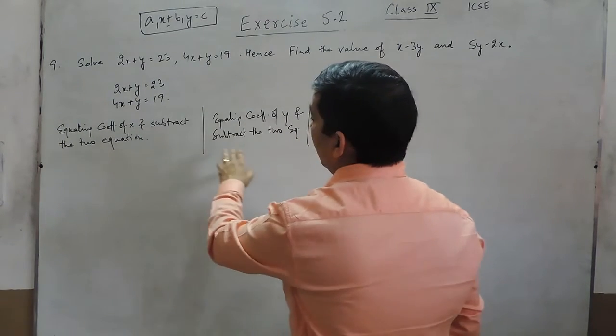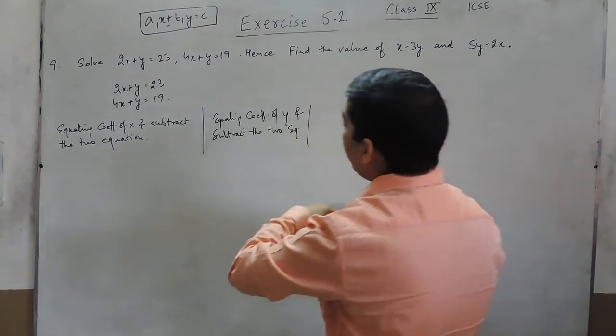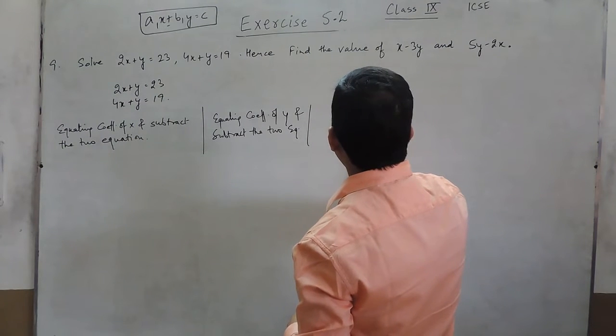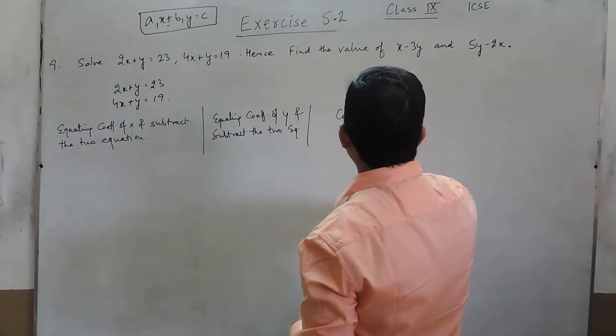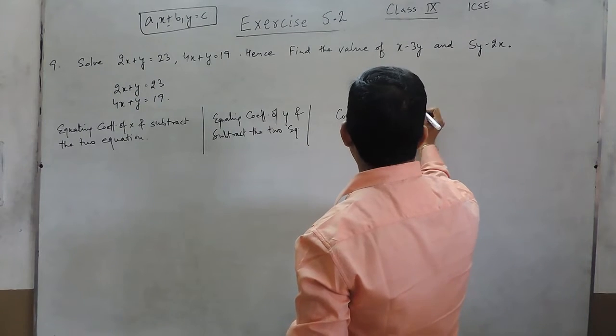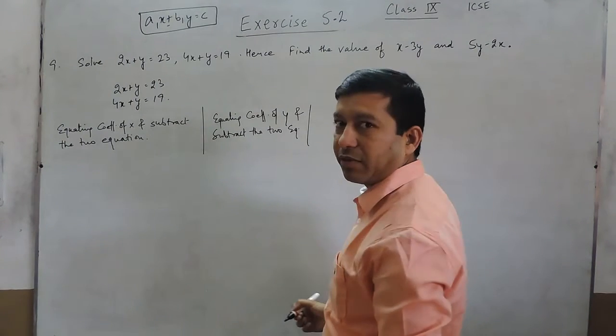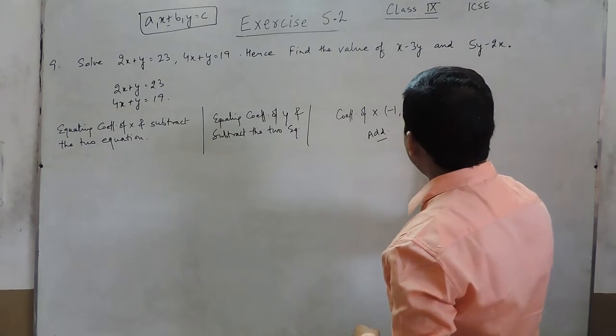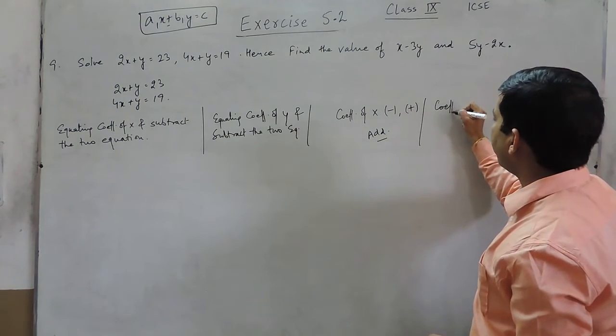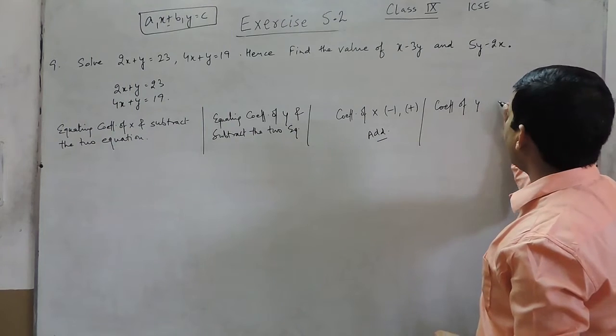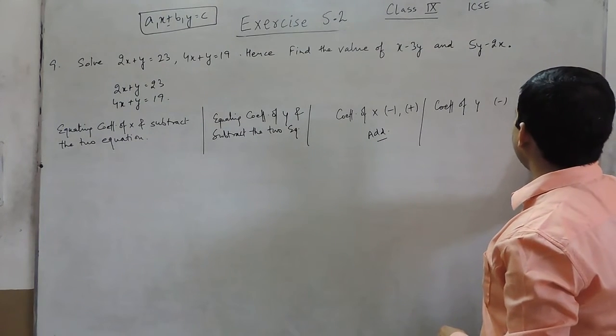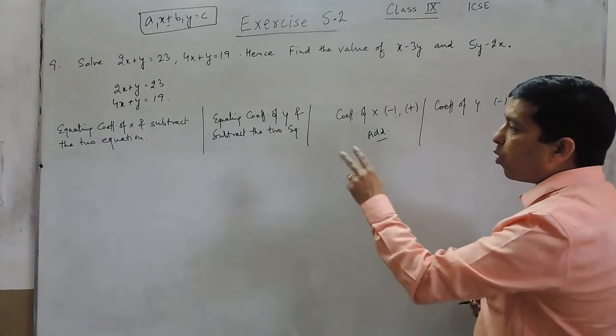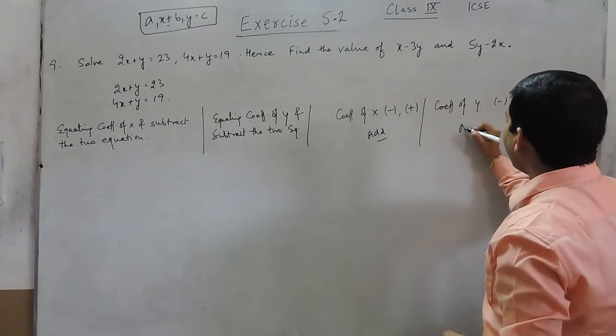So here we are subtracting, but if the coefficient of x in one equation is negative and in another equation it is positive, then we can add the two equations. Same way if the coefficient of y in one equation is negative and in another it is positive and both are equal, we can add the two equations.